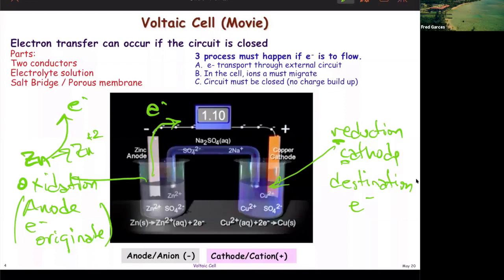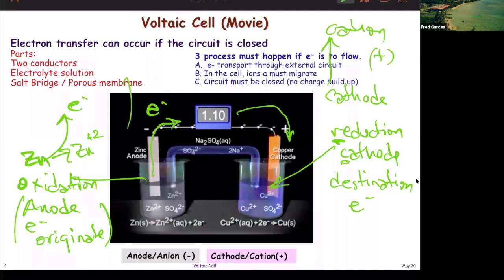Think of cathode as cations — cations are positive. Think of anode as anions — anions are negative. The anode is your electron source; your cathode is your electron destination. The electron source is negatively charged; your electron destination is positively charged. This chart tells you how to label an electrochemical cell. An electrochemical cell will have oxidation and reduction, an anode and a cathode — notice negative here and positive here. You also need a salt bridge with a semi-permeable membrane so that the ions are free to move about.